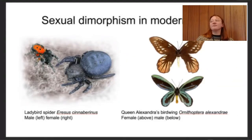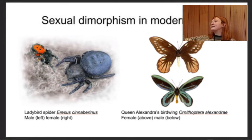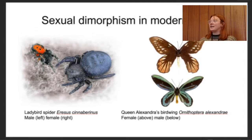We also see sexual dimorphism in invertebrates — it's really present across all areas of multicellular organisms. You've got the ladybird spider and butterflies as examples. As you can see, it's really widespread throughout the animal kingdom.